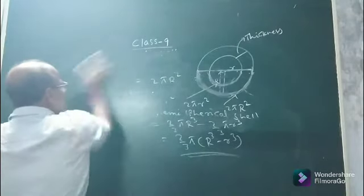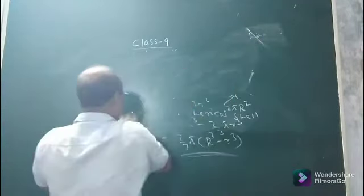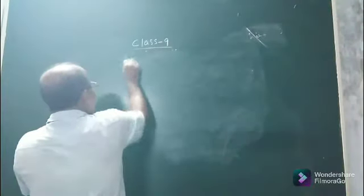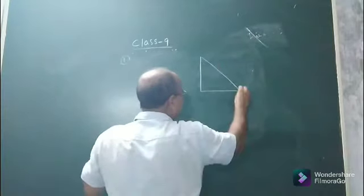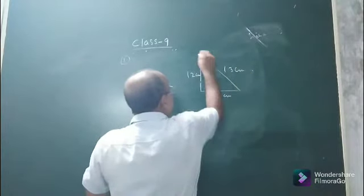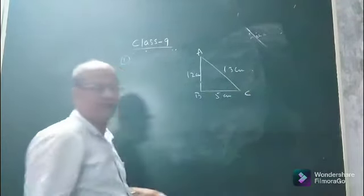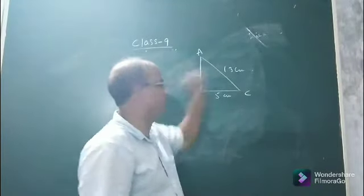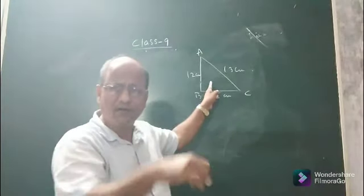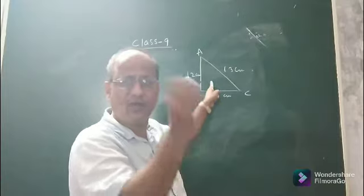Here is an interesting question from your NCRT book on cone — what is a cone, how a cone is generated, and how to find its surface area and volume. Suppose you are given a right-angle triangle with sides 5 cm, 12 cm, and 13 cm. You already know that a cone is generated when, keeping one side of a right-angle triangle fixed, the triangle is revolved about that fixed side.